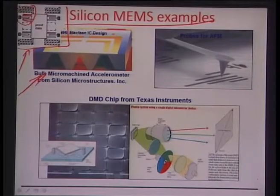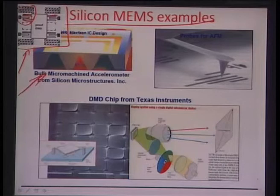The advantage is that because of the very small proof mass involved, even the smallest change in acceleration or deceleration of a moving structure can be very easily recorded. This is a fantastic example of what silicon micro machining can do.